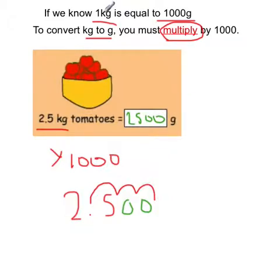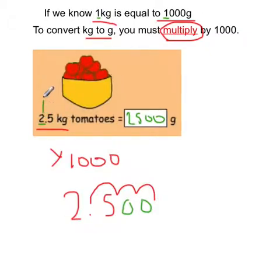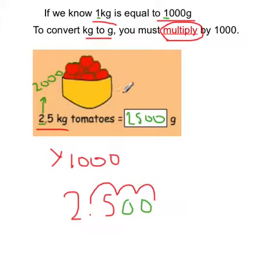We can double-check that because we know 1 kilogram is equal to 1,000 grams and we've got 2 kilograms, so there must be at least 2,000 grams. So it looks like that's correct.